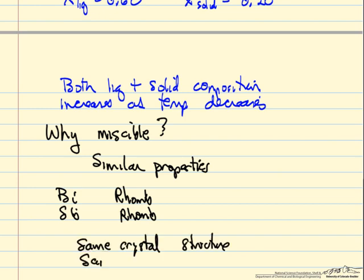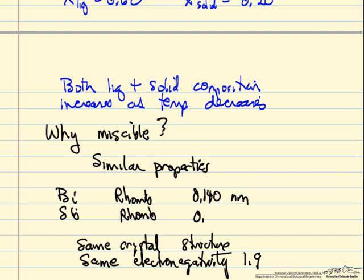They also have the same electronegativity, 1.9, and they have similar atomic radii so that they can pack together into this crystal structure. Not identical, but similar enough that they're miscible as a result of their properties being similar.